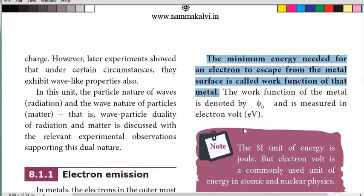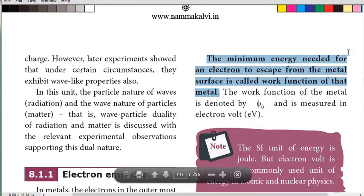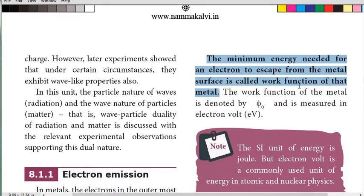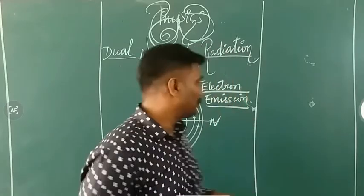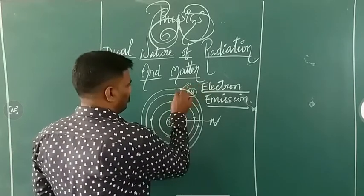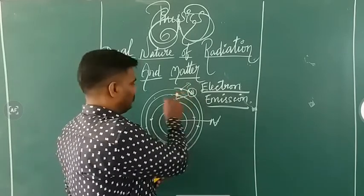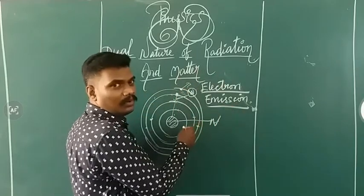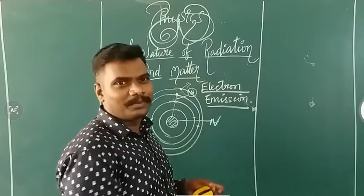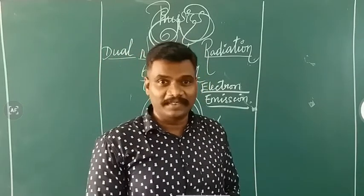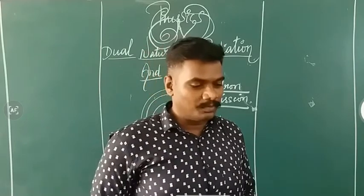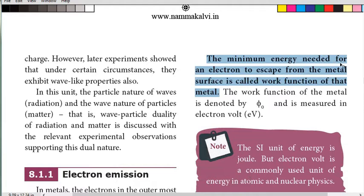The next important term is work function. Work function means the minimum energy needed for an electron to escape from the metal surface. It is called the work function of the metal. The SI unit of energy is Joule. However, in atomic physics, we also use the electron volt unit. One electron volt is the kinetic energy gained by an electron accelerated through a potential of one volt. One electron volt equals 1.602 × 10⁻¹⁹ Joules. This value is very important for solving problems.